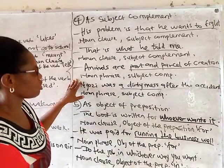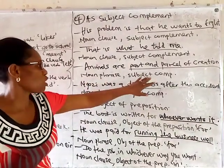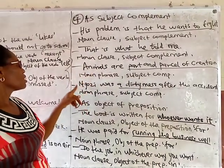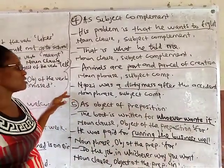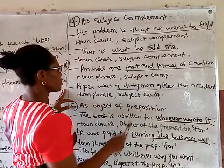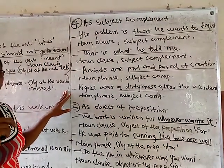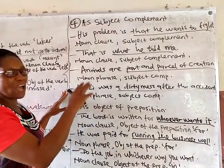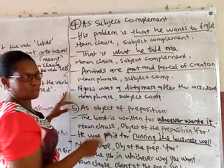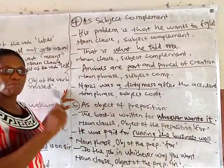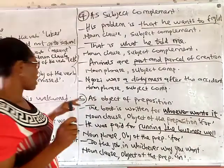'Animals are part and parcel of creation' — 'part and parcel of creation' is a noun phrase and the subject complement to the noun 'animals'. 'Nkosi was a walking myth after the accident' — 'a walking myth' is a noun phrase and the subject complement. Remember, when we have a complement, we never have a main verb — the verbs in these sentences are auxiliary or linking verbs. But when you have an object, you must have a main verb, an action verb. When you have a linking verb in a sentence, what follows is a complement, not an object.